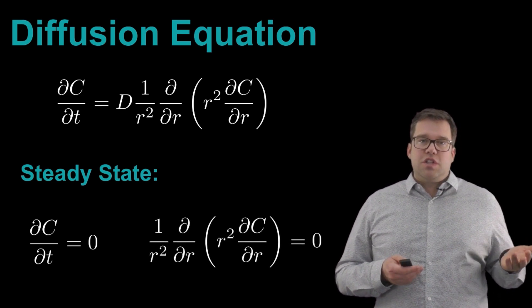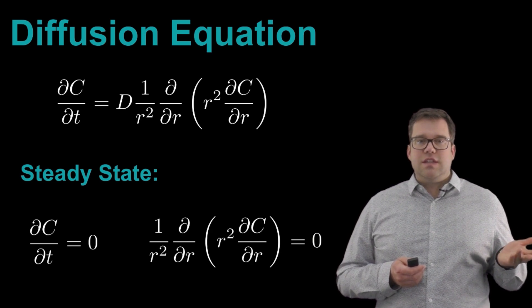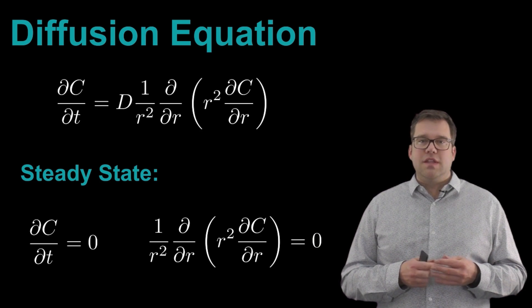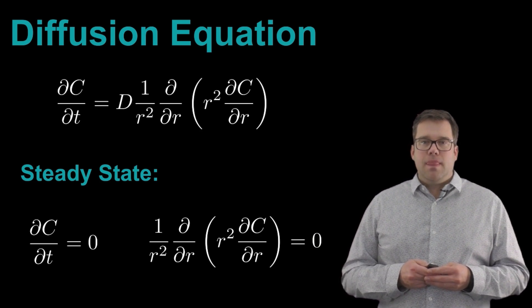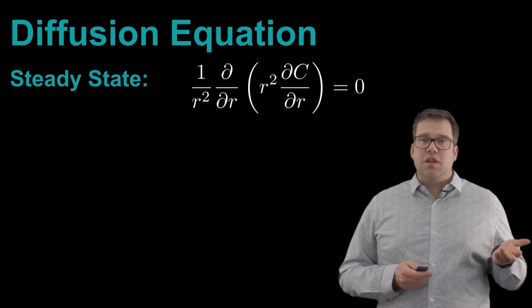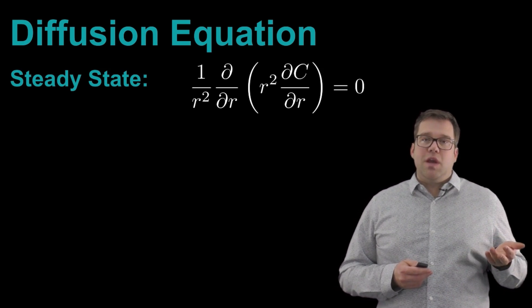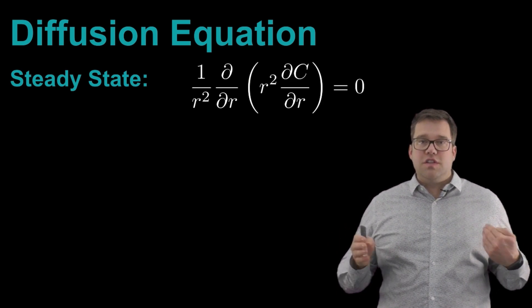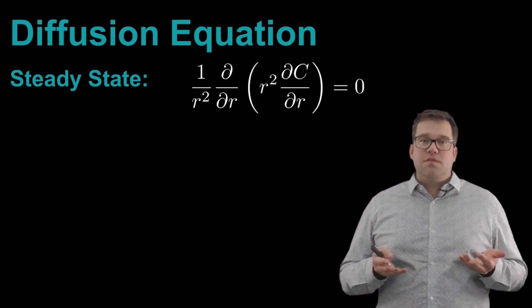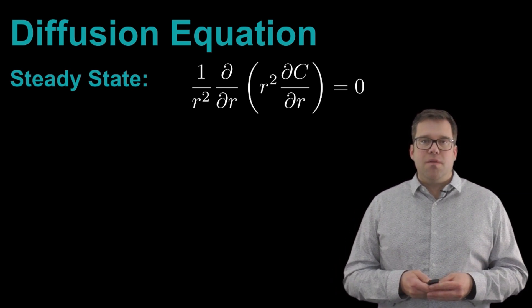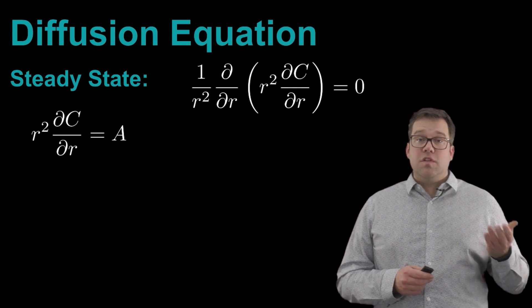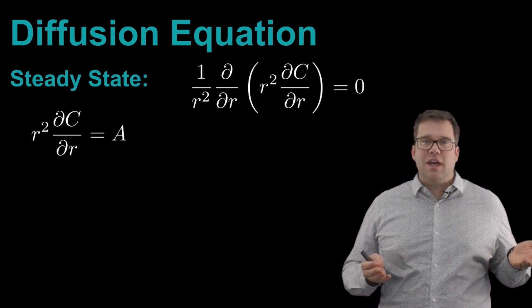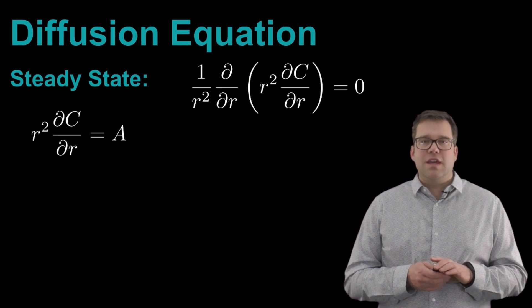So what we're going to do is set this rate of change of the concentration dC/dt equal to zero using the equation above. That means that this right-hand side is equal to zero. And once we make that steady state assumption, we can begin to integrate this equation to solve for the concentration as a function of this radius r, just as a function of space. So this will give us the concentration field around a spherical cell.